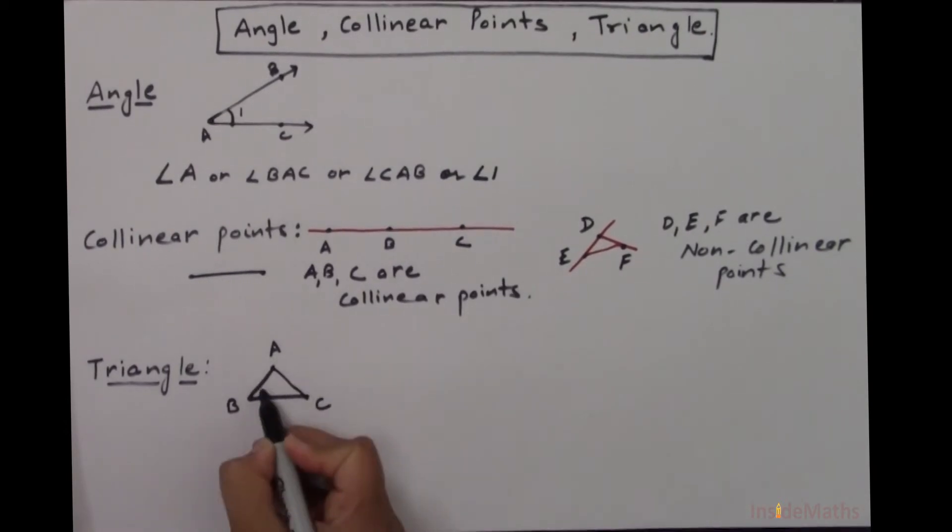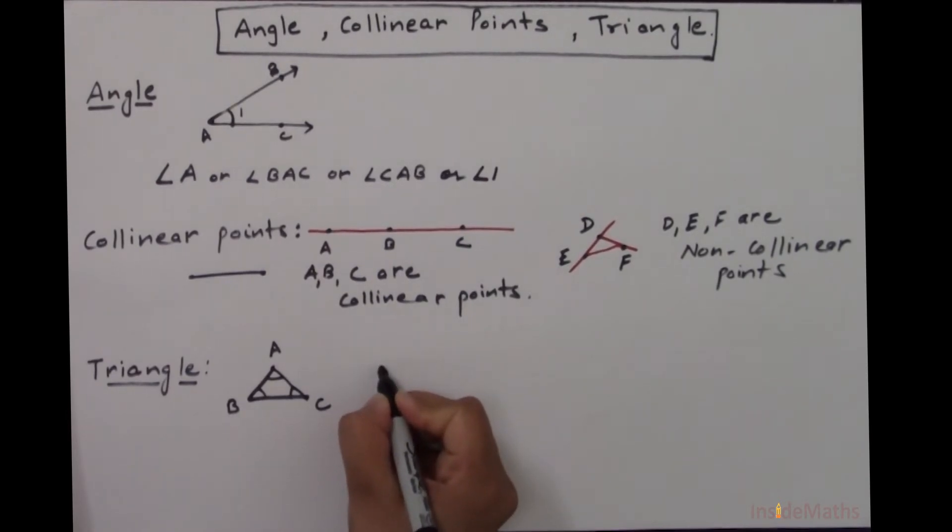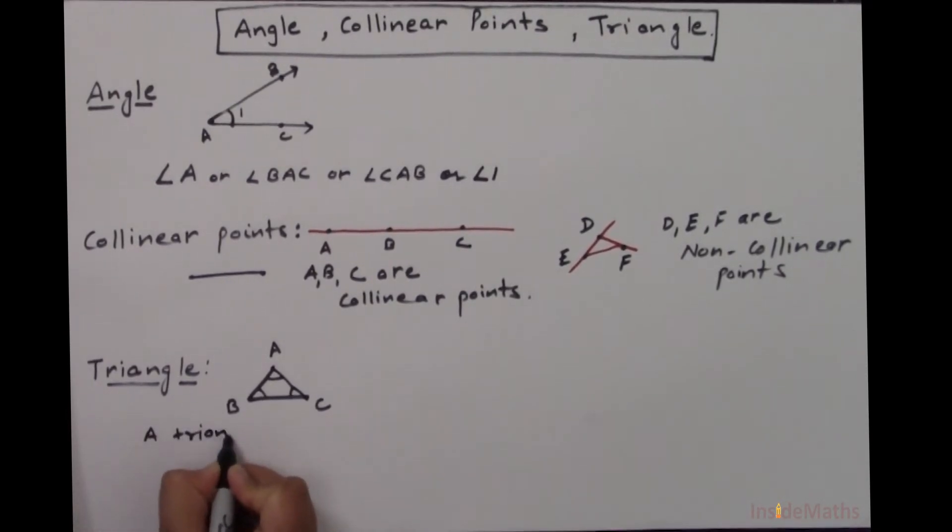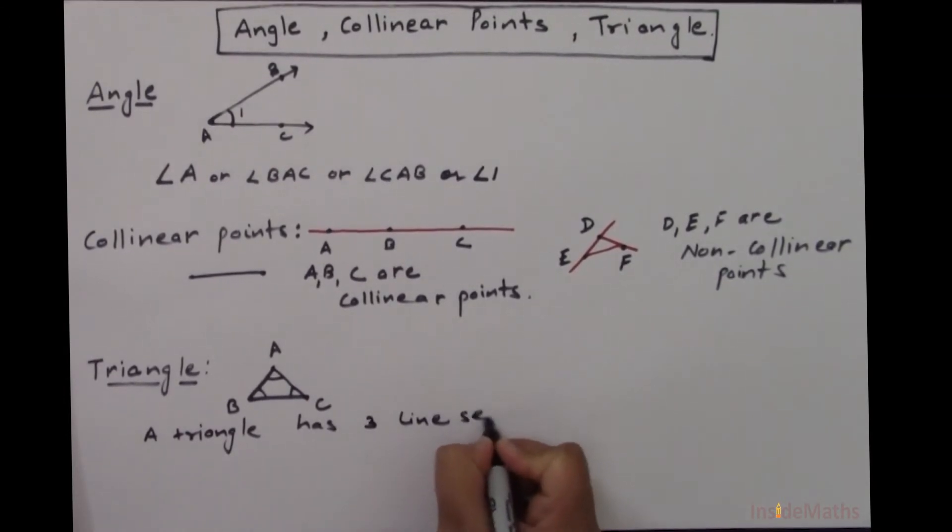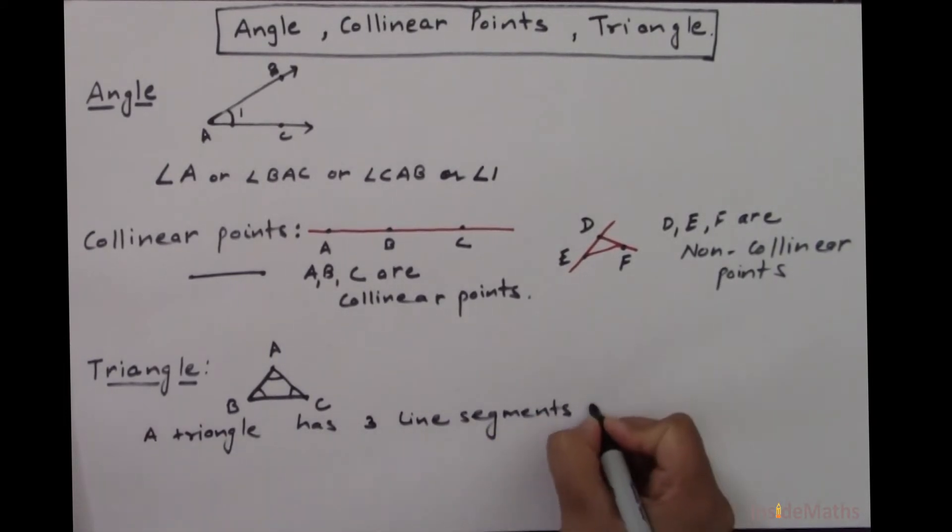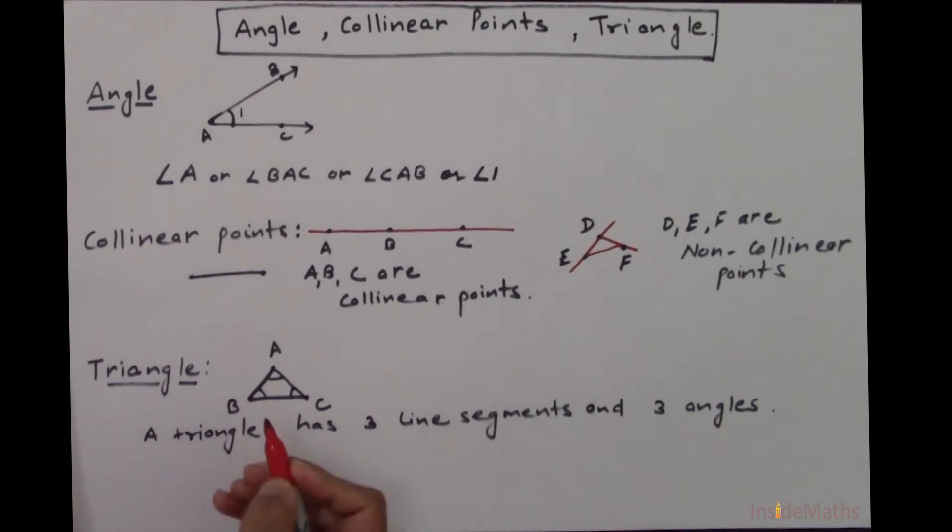A triangle has three angles and three line segments. I'll write triangle has three line segments and three angles. Let's say I am considering this angle B, so I can assume that this is a ray and this is the common endpoint B. Then this will be angle B or ABC.